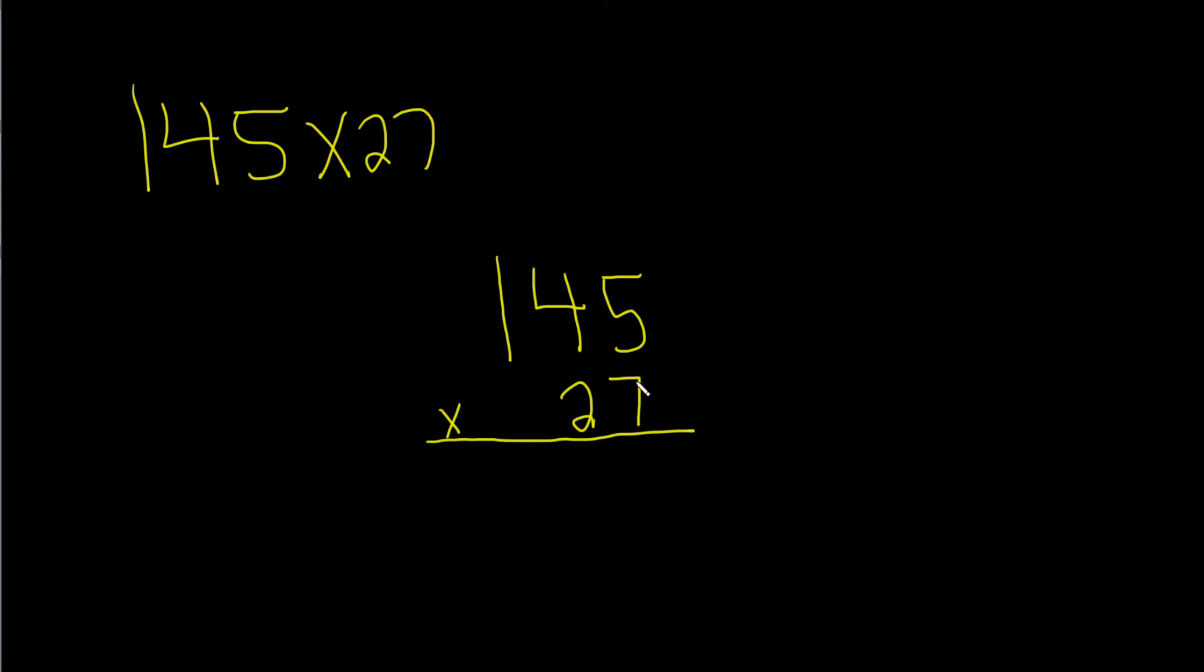We start with the 7. 7 times 5 is 35. We can't write 35 here, so we write down just the 5 and carry the 3. We write it up here. 7 times 5 is 35, carry the 3.